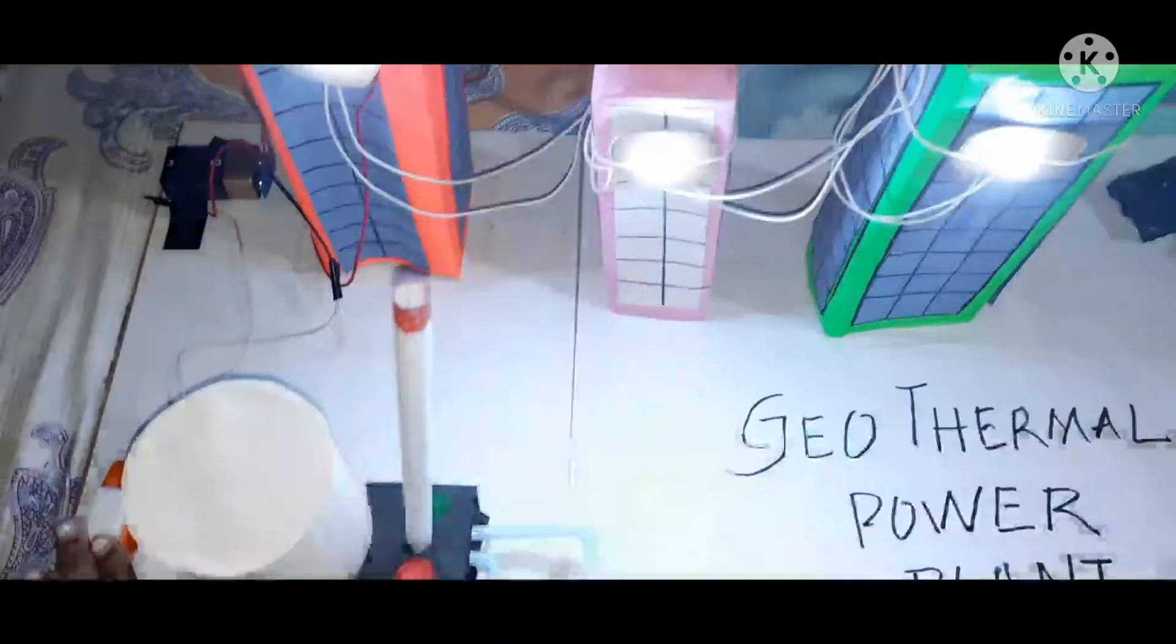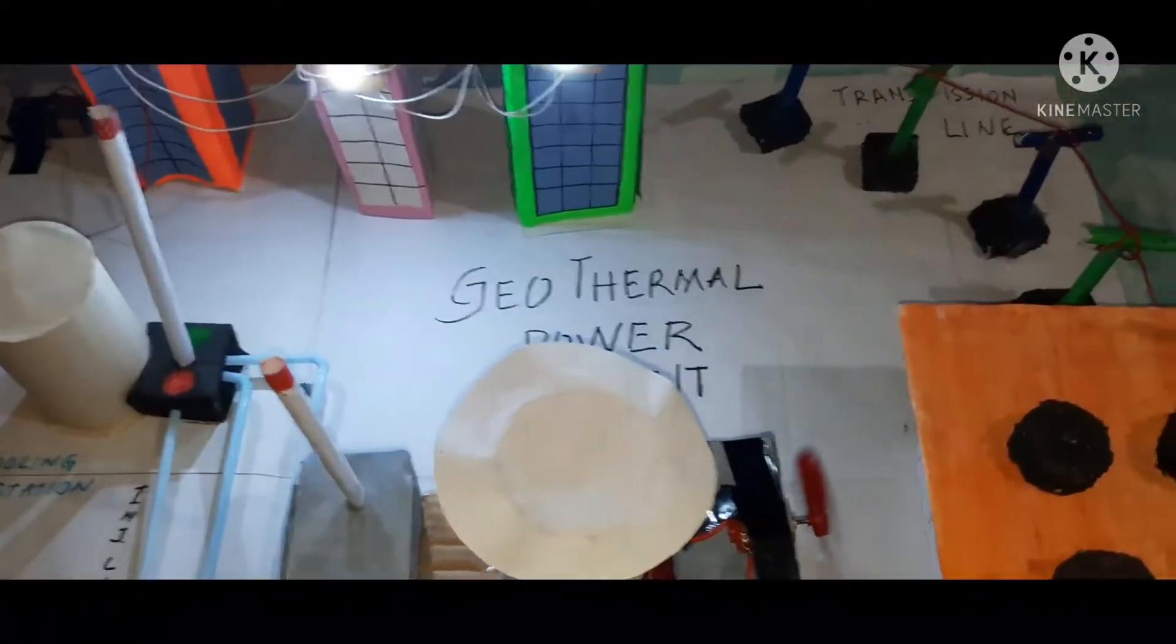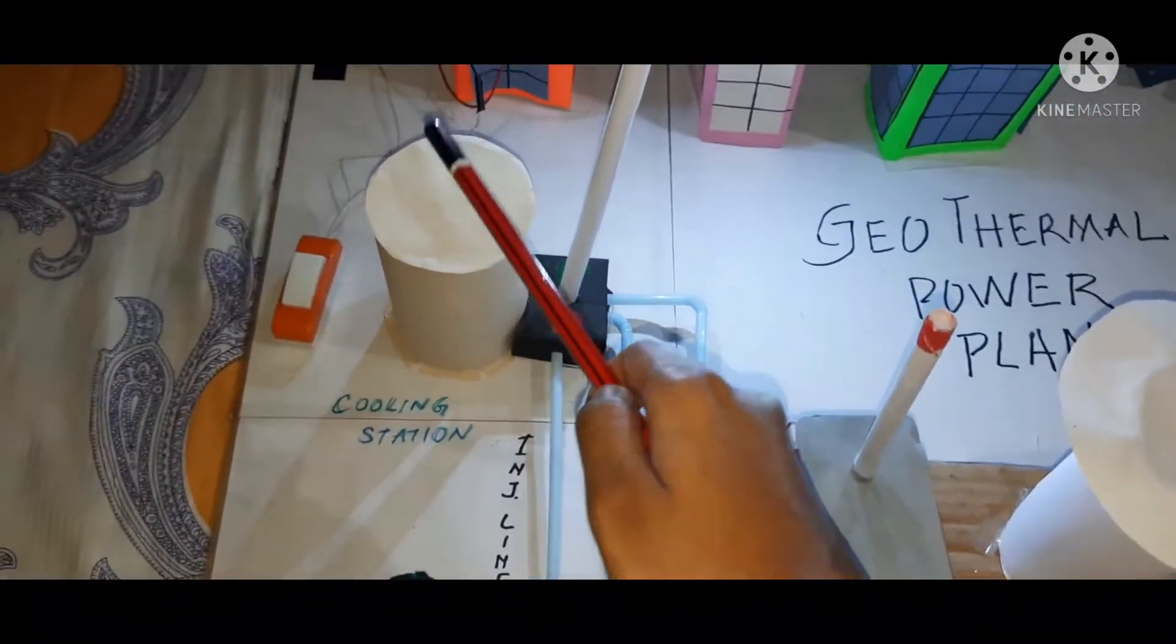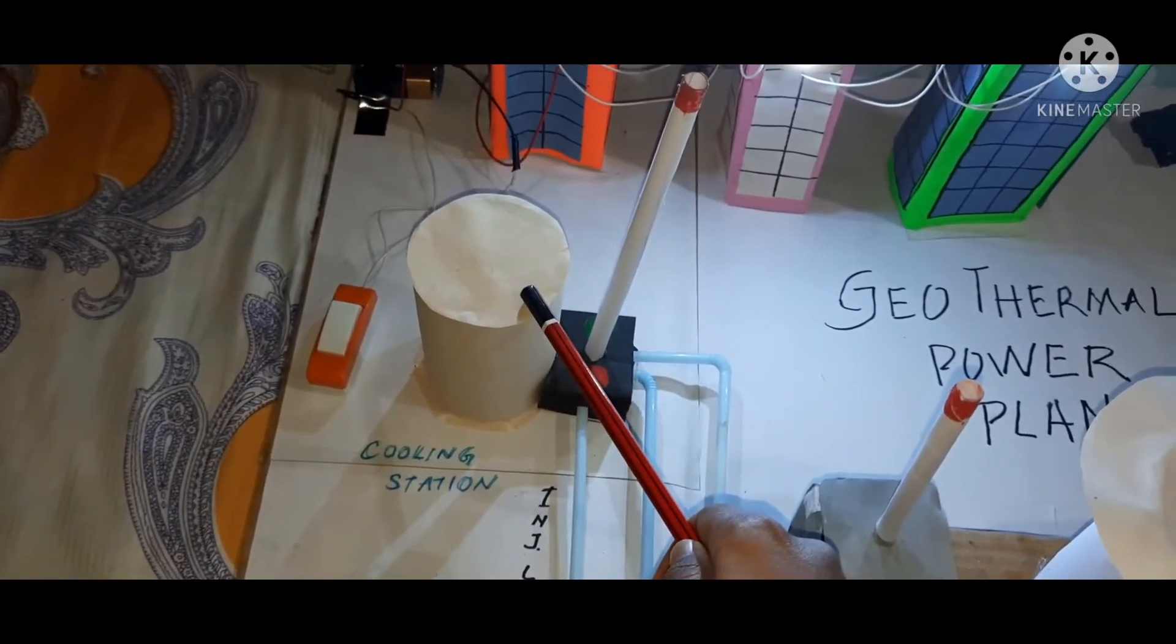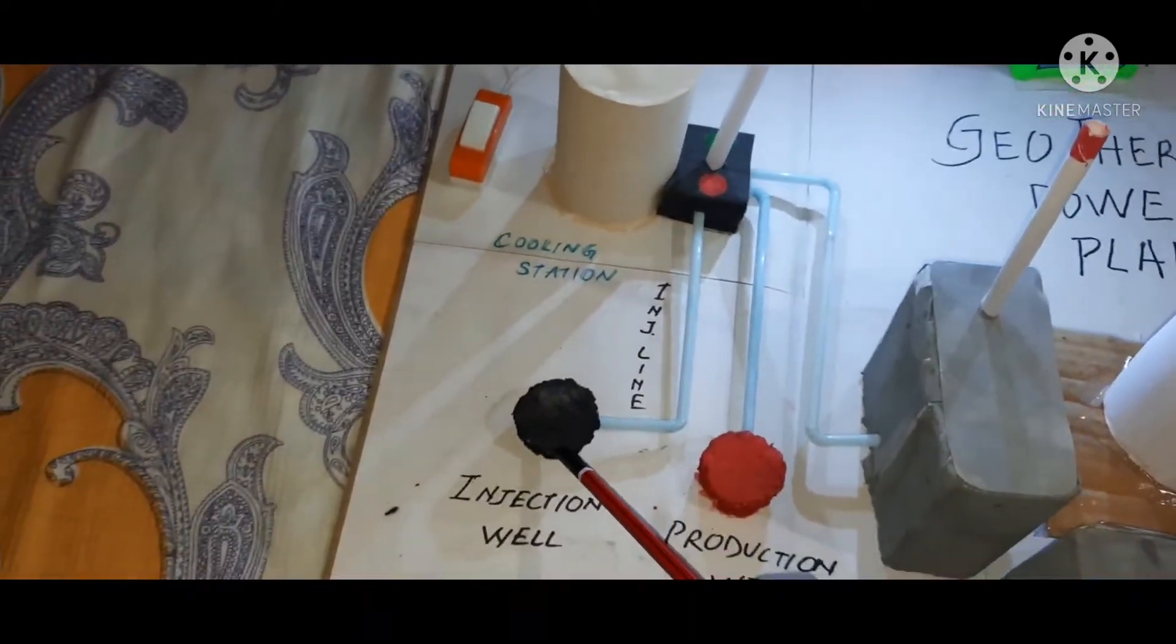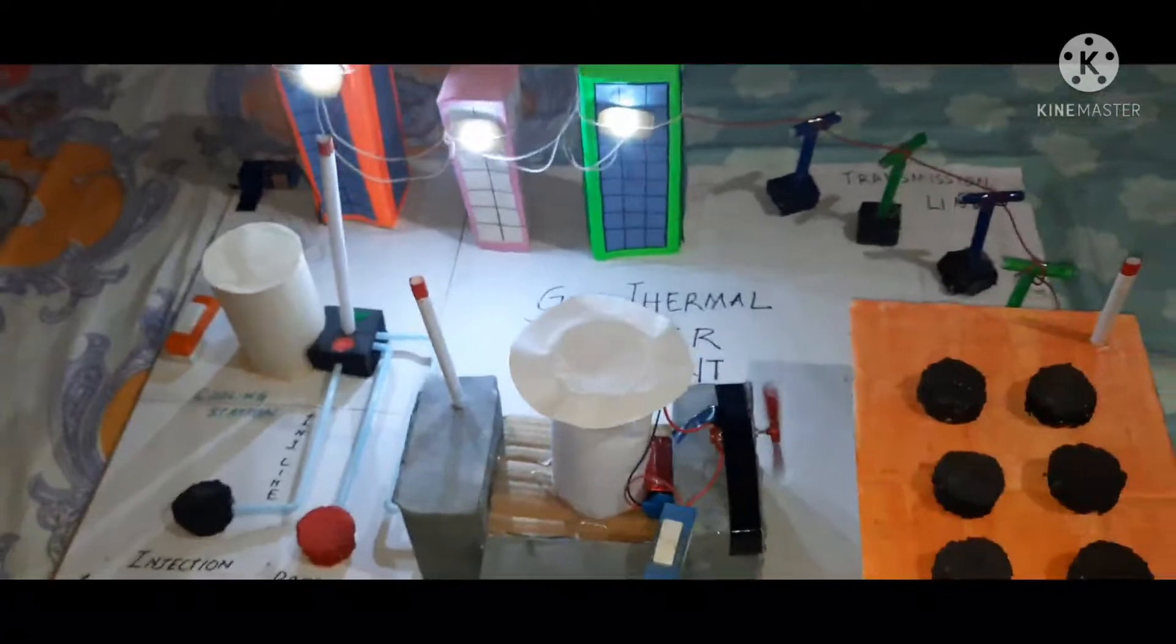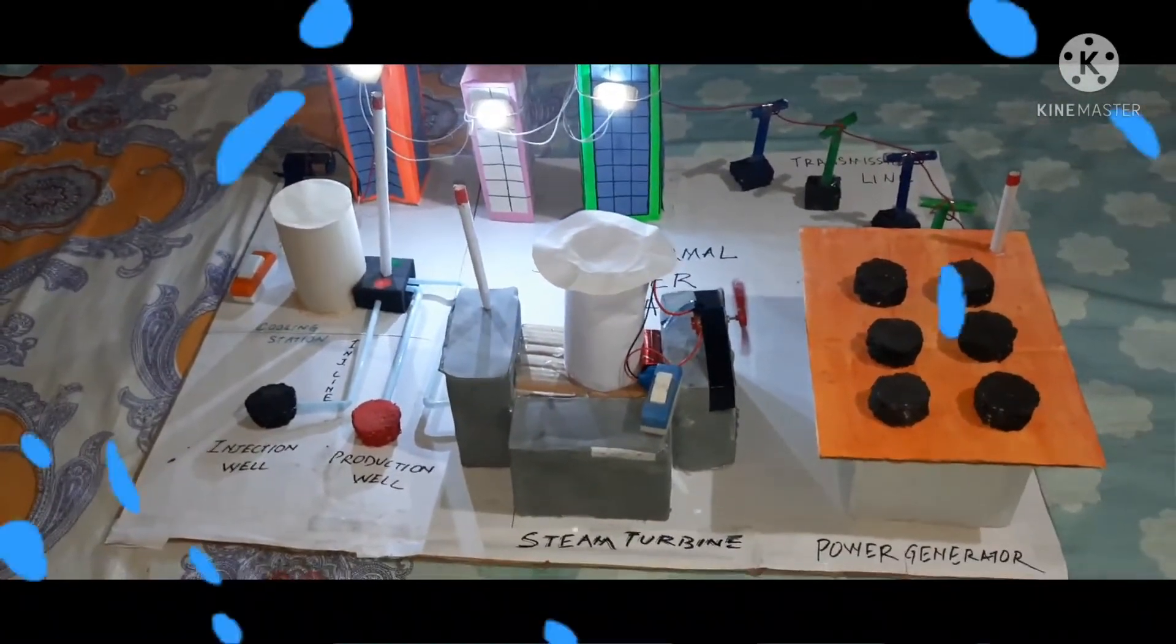After the steam has passed through the turbine, it is sent to the cooling station where it condenses back into water. This water is then injected back into the earth through the injection well to reheat it. This is how a geothermal power plant operates.